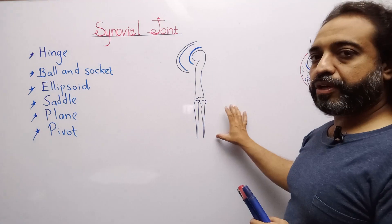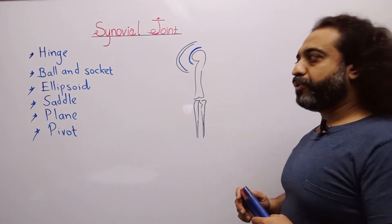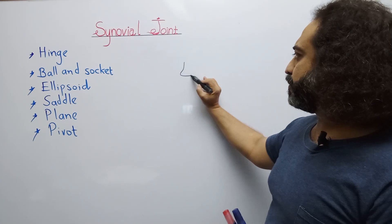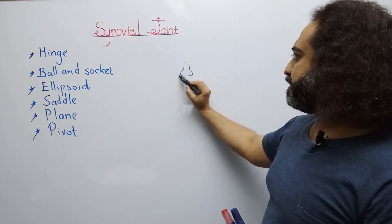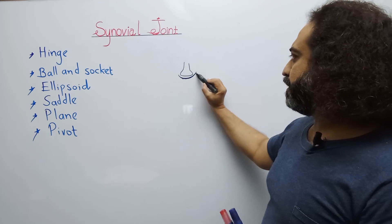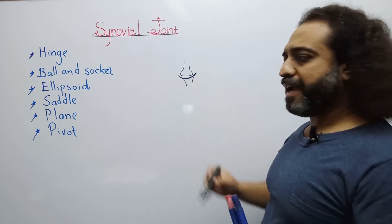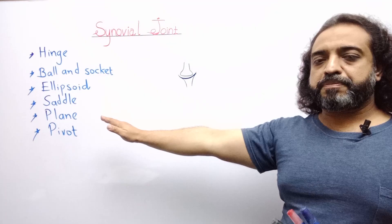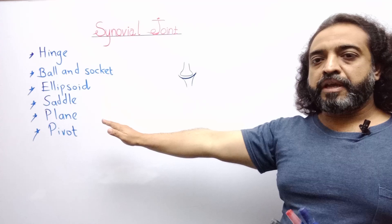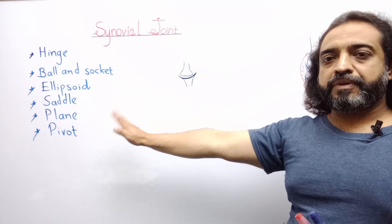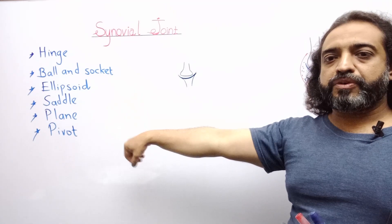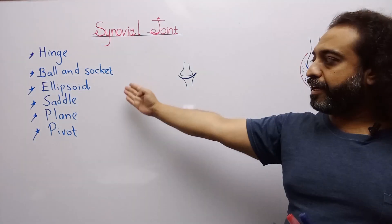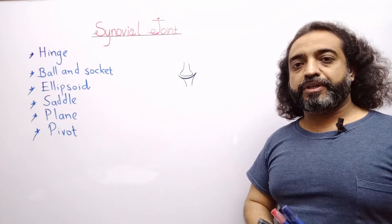Ellipsoid joint is also very similar to ball and socket joint. Here is also a socket and a ball-like structure, but actually it is a multi-stage joint. For example, in our wrist, there is present the radiocarpal joint, and we can move our arm upward, downward, in multiple directions. So it is basically the ellipsoid joint.